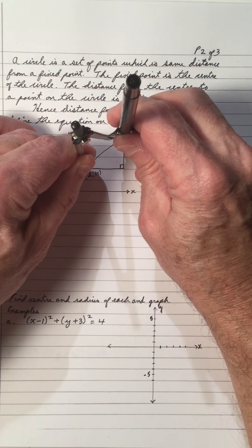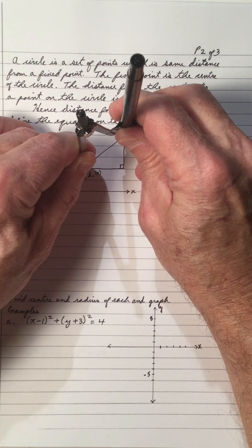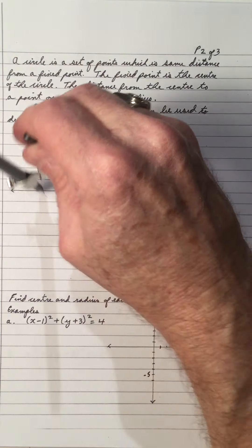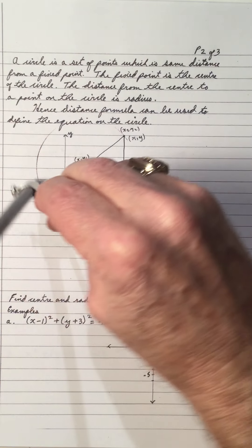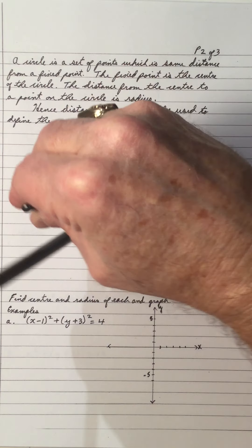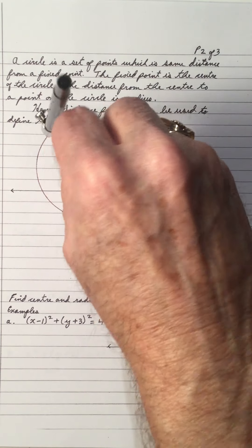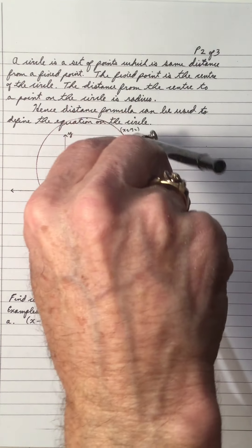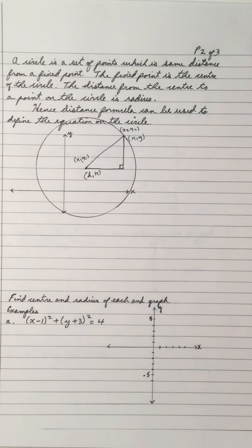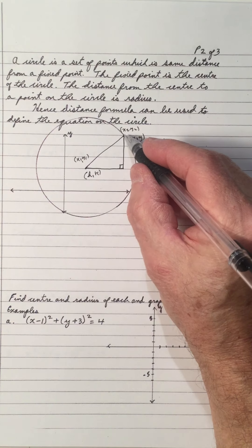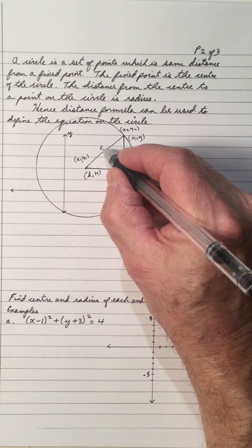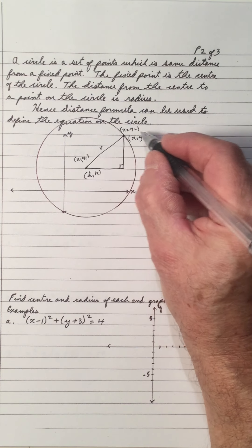Now I'm going to draw the circle using the protractor. Notice the distance — I get all the way around. Notice the center is h, k, which is the center of the circle. We want this distance to be the radius of the circle from the center to the point on the circle.